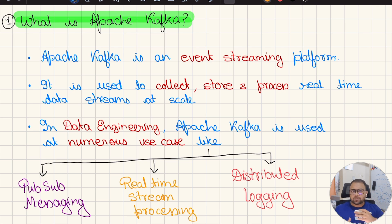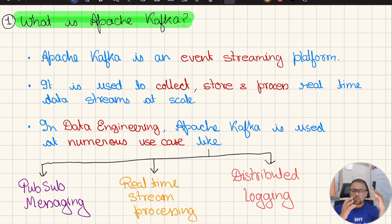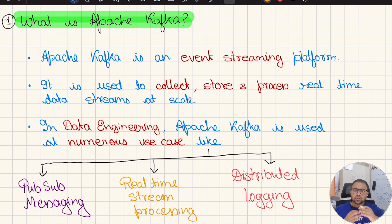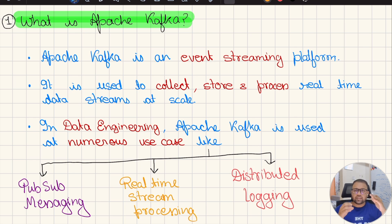In the first use case, where Kafka acts as a pubsub messaging queue, in the data engineering world there will always be some producers who will produce data to Kafka topics in append mode. And there will be some consumer applications like Spark Structured Streaming and Apache Flink which will read from Apache Kafka, where you are storing the data for some duration of time. Usually the data in Kafka is stored for short durations. So in this use case, it acts as a messaging queue.